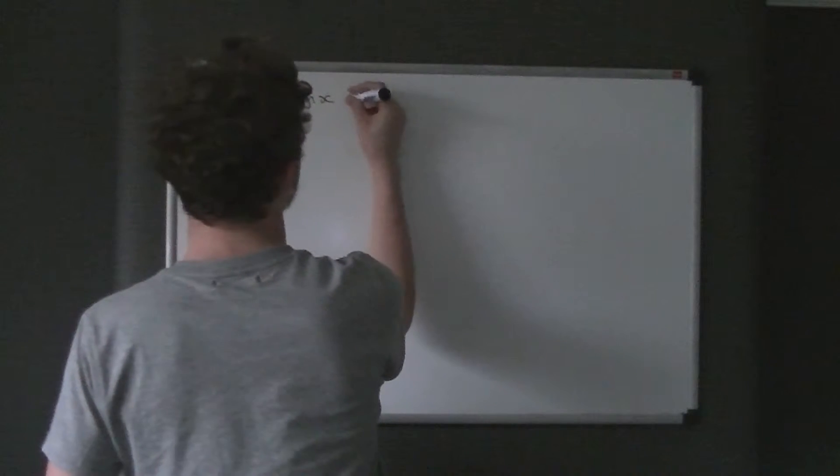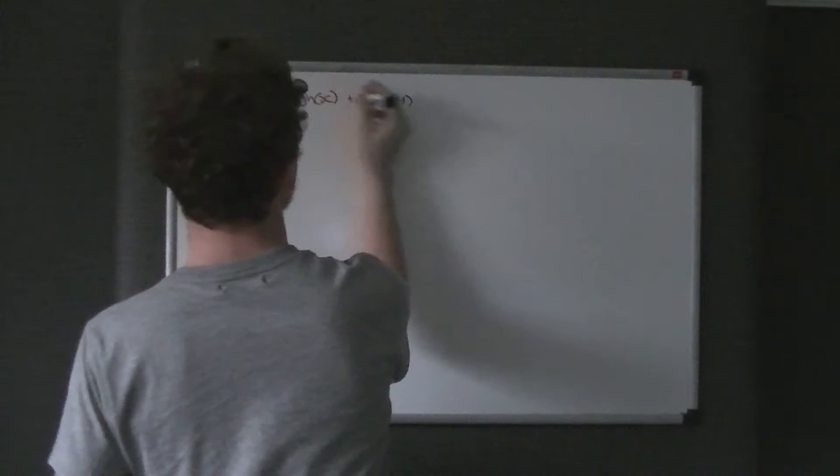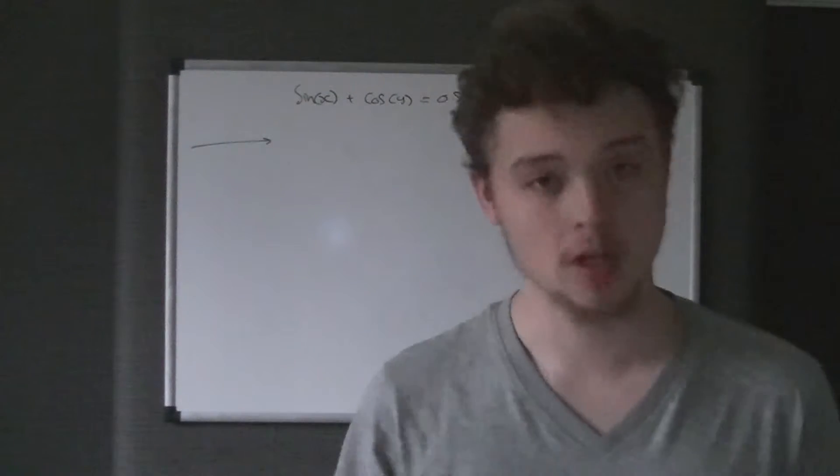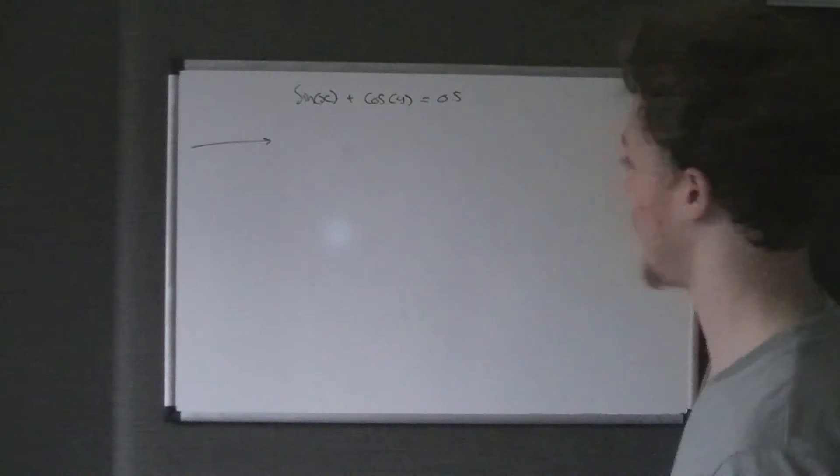For the first part of this question, we use implicit differentiation, and then it's just a case of using trig. We have trig in the implicit differentiation that we do, but we're going to be using it in the context of finding angles in CAST diagrams. The second part of this question isn't really a topic we've covered — it's more of a logical thing where you have to think around the problem. So we are given the equation sine x plus cos y equals 0.5, and we're asked to differentiate that using implicit differentiation.